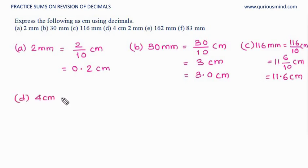D, 4 centimeter 2 millimeter. That will be 4 which is already centimeter, and 2 divided by 10. 4 is whole. 0.2 in the 10th place, so 2 here. 4.2 centimeter.